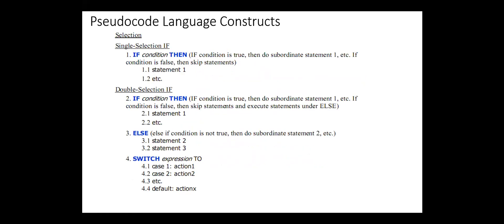Next, selection constructs. Single selection if: if condition then, if condition is true, then perform statement 1, else skip statement 1. Double selection if: if condition then perform a group of statements, else perform another group of statements. Switch constructs: we switch to one of the cases depending on the value of the expression.